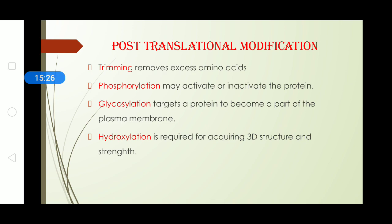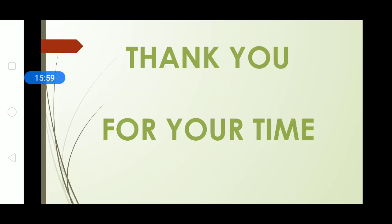In glycosylation process what happens is the proteins are targeted to become a part of the plasma membrane. These are the proteins which are integral part of the plasma membrane. When they are formed by the process of translation they are brought to the cell membrane and incorporated in it. And the last modification is the hydroxylation. Hydroxylation is very important because it gives the proteins a 3D structure and provides them with strength. Well with this we complete our translational and thank you.